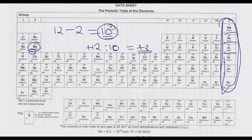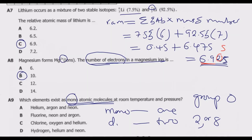We need to find the option that contains only group 0 elements. Looking at option A: helium — correct, argon — correct, neon — correct. So option A is correct. Option B contains bromine, which is not a noble gas — incorrect. Option C contains chlorine and oxygen, which are incorrect; only iridium fits. Option D contains hydrogen, which is also incorrect. Therefore, option A is the correct answer.